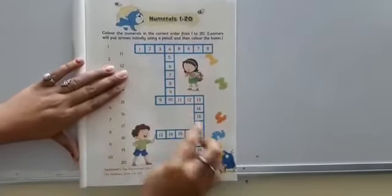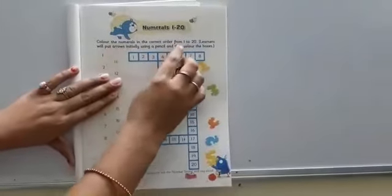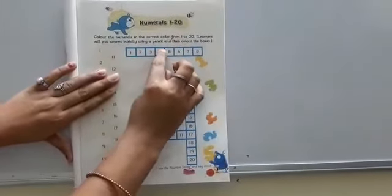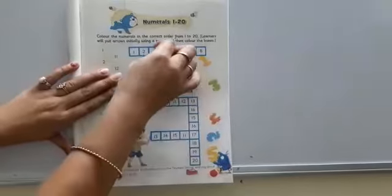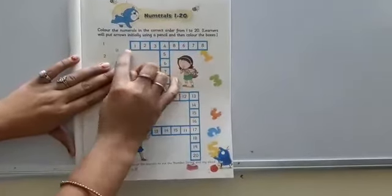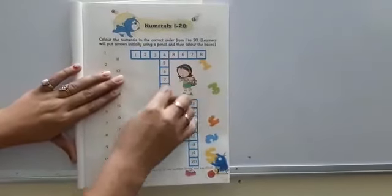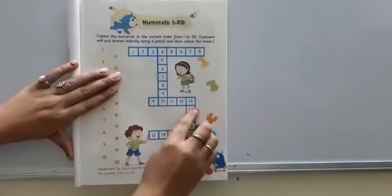आपको ये दिये हुए हैं बॉक्स, इसमें आपको ओर्डर में जैसे 1, 2, 3, 4, आप 4 के बाद आपको क्या दिख रहा है? 8, पर हमको ओर्डर में करना है, पहले ऊपर मिल जाएंगे, फिर डाउन में जाएंगे, फिर साइड पे जाएंगे, ठीक है?